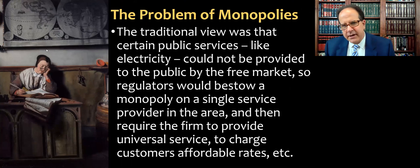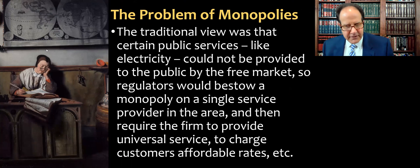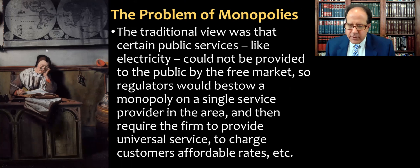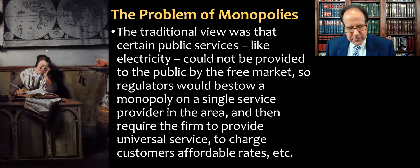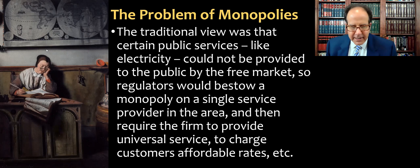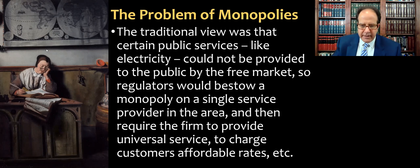The problem of monopolies: the traditional view is that certain public services like electricity couldn't really be provided by the free market, so regulators would bestow a monopoly on a single service provider. In the early 1900s, this was done with electricity, water, and telephone service, where there was basically one phone company. We would then require that firm to provide universal service to everyone and charge affordable rates — basically picking a dominant carrier and saying you have a monopoly, but now we're going to regulate you, and you won't have to worry about new market entrants competing with you.